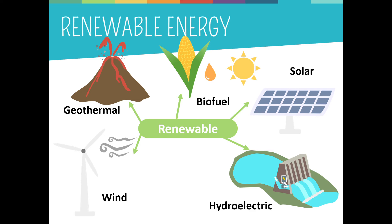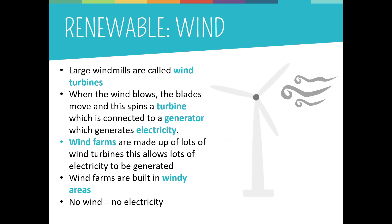Examples of renewable resources include solar, wind, water, and geothermal. Large windmills are called wind turbines and are built to harness wind energy. When the wind blows, the blades move and spin a turbine connected to a generator which produces electricity. Wind turbines essentially work in the opposite way to a fan — instead of using electricity to make wind, they use wind to make electricity. In order to create enough energy to power thousands of homes, energy companies build large wind farms with lots of wind turbines.